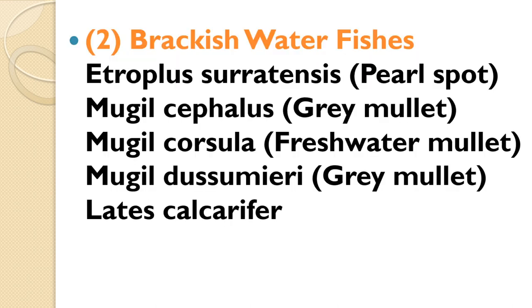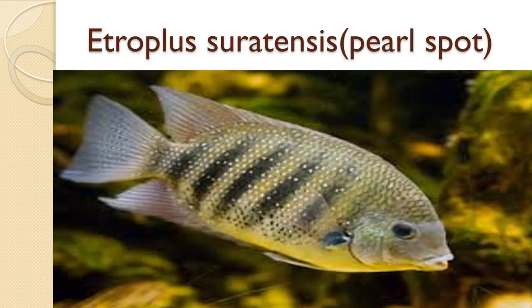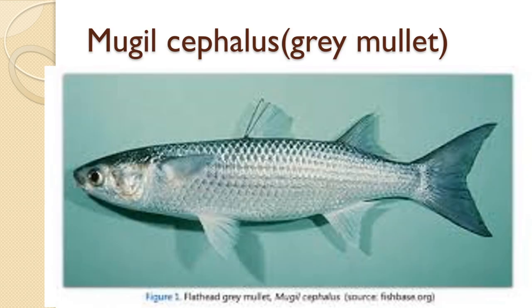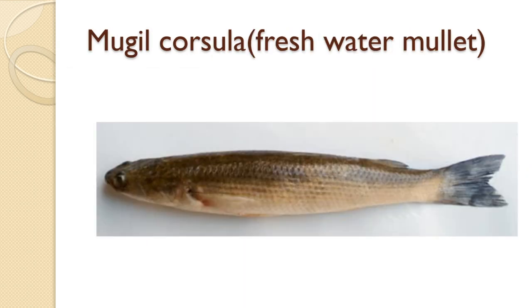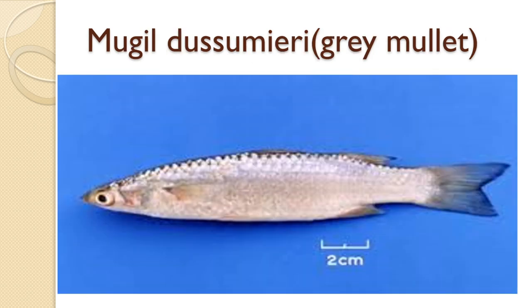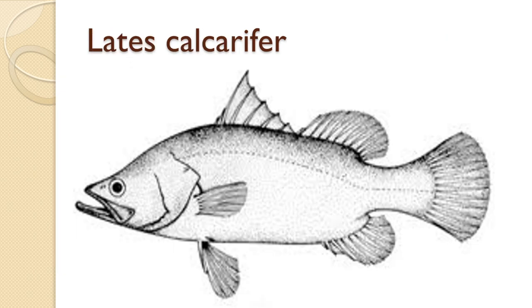Brackish water fishes used for culture: Etroplus suratensis (Pearl Spot), Mugil cephalus (Grey Mullet), Mugil corsula (Fresh Water Mullet), Mugil dusumieri (Grey Mullet), and Lates calcarifer (Sea Bass).